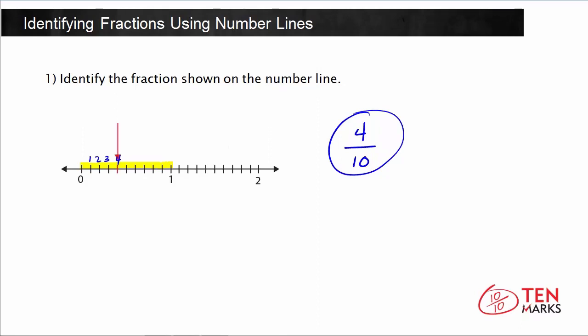Another way you can do this is to count up from 0. Each division is 1 tenth, so the second division represents 2 tenths, the third division is 3 tenths, and this division is 4 tenths. Notice that you add 1 to the numerator as you count up — going from 1 to 2, 2 to 3, 3 to 4.